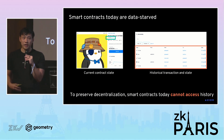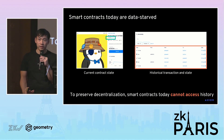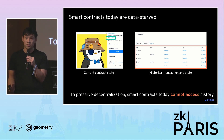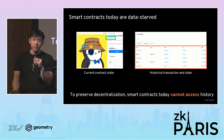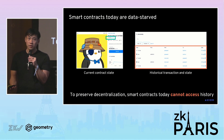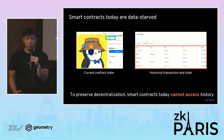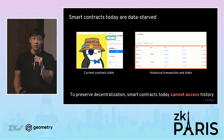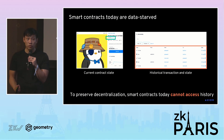You might think this is a design flaw of Ethereum — why don't we let contracts access more information? But it's actually a fundamental trade-off that Ethereum makes to remain decentralized. If we allowed smart contracts to access the full history, then every full node would essentially have to become an archive node and have random access to the entire history of Ethereum, and that would obviously hurt decentralization.